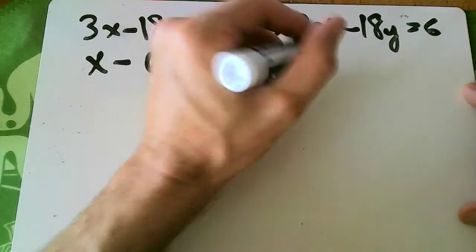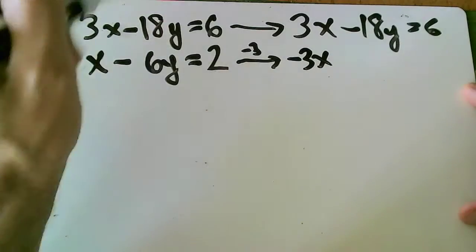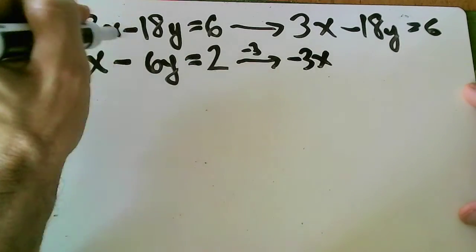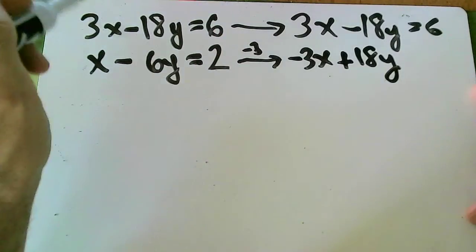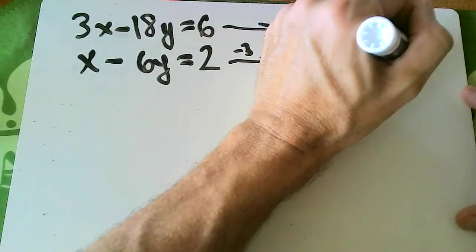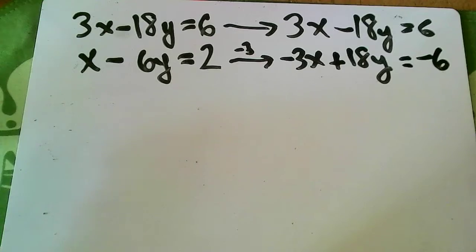When I do that, I'm going to get negative 3x plus 18y equals negative 6.